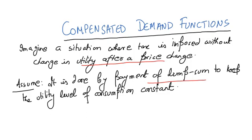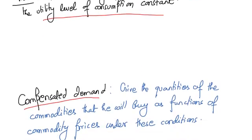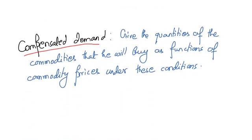there is a lump sum payment to keep the utility level of consumption constant. Thus we can see that a compensated demand gives the quantities of the commodities that he will buy as functions of commodities' commodity prices under these